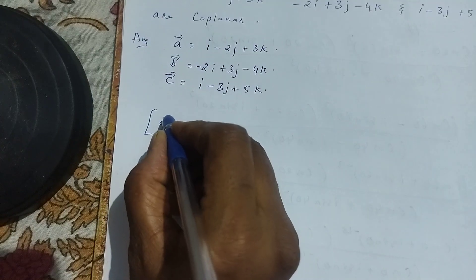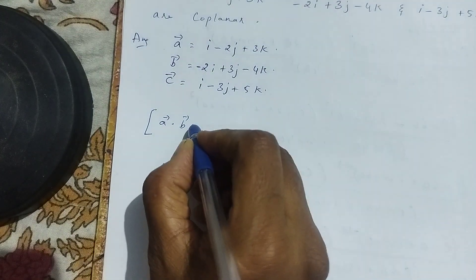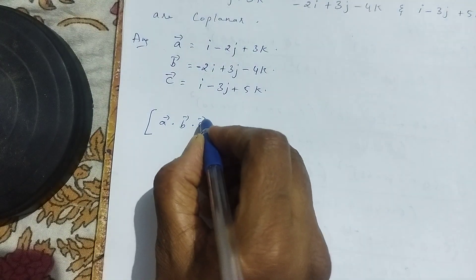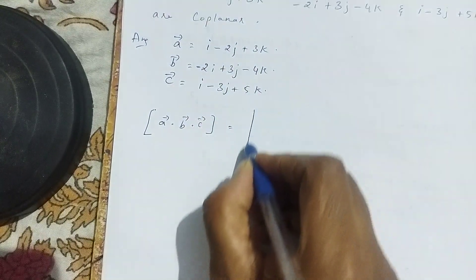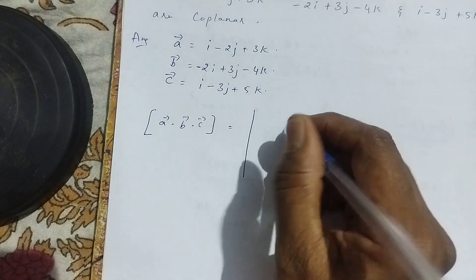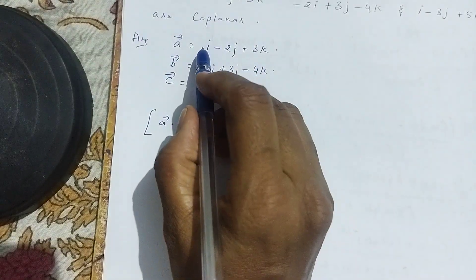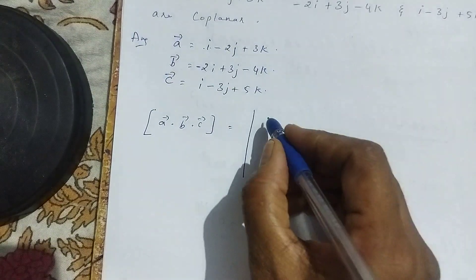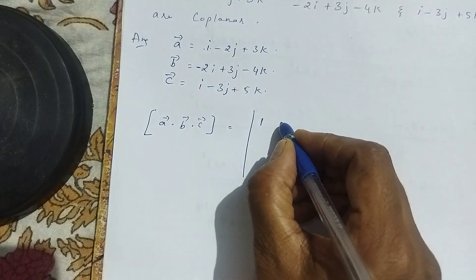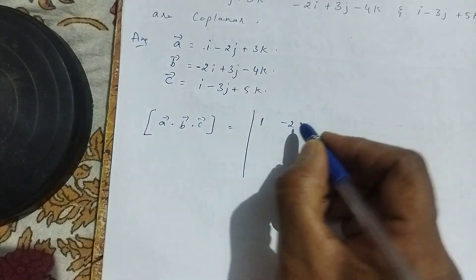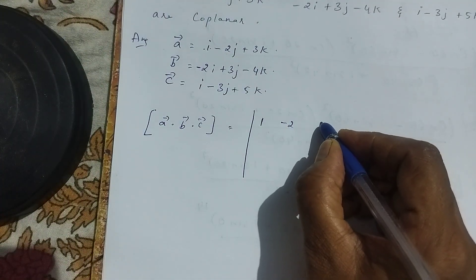To check for coplanarity, we compute the scalar triple product using a determinant. We place the coefficient of i, j, and k for each vector as rows. For vector a: coefficient of i is 1, coefficient of j is minus 2, coefficient of k is plus 3.